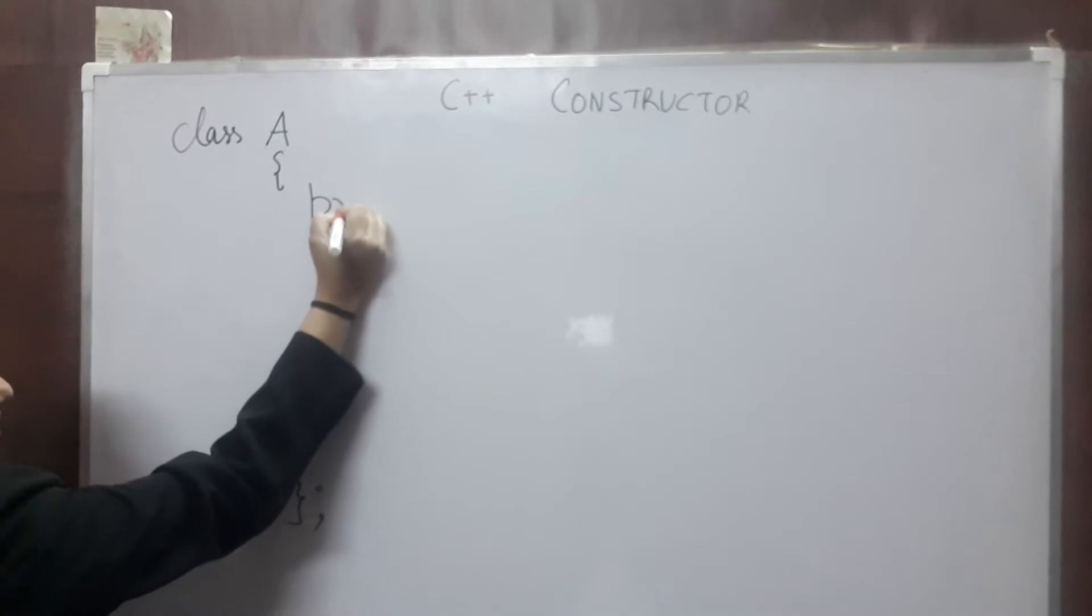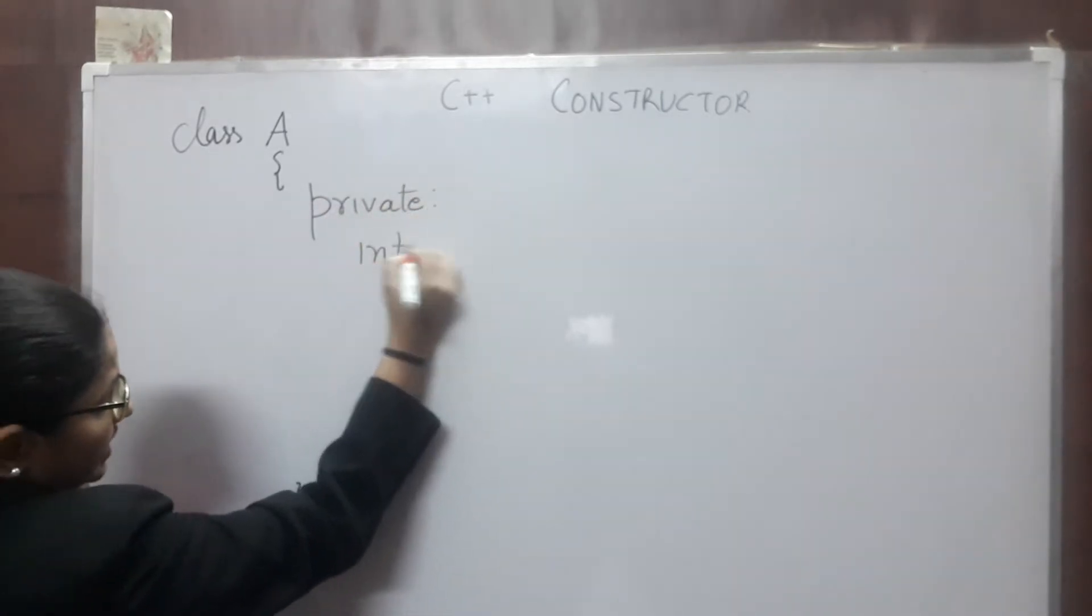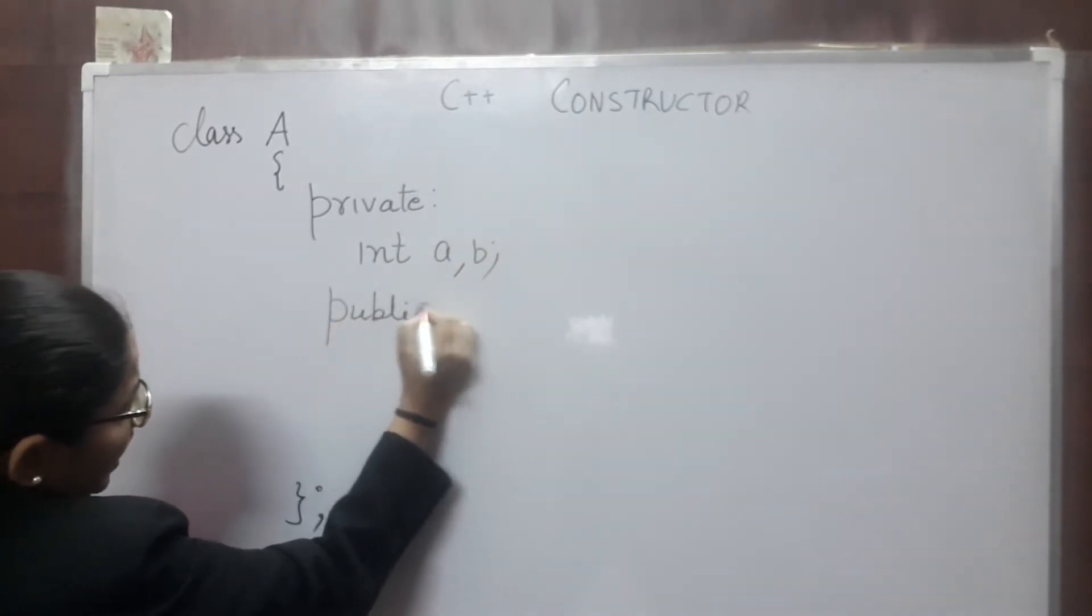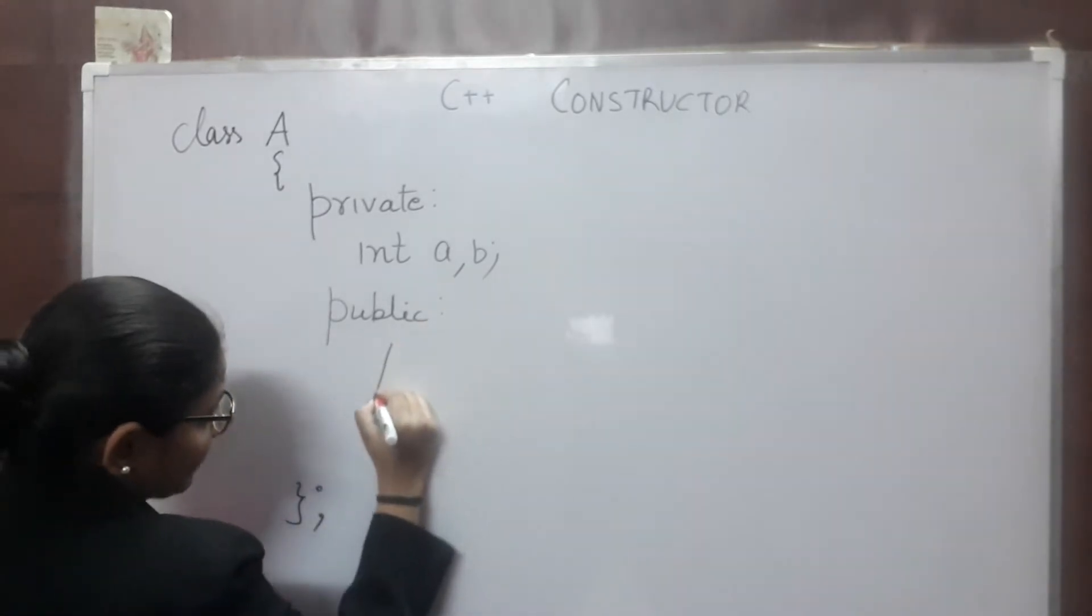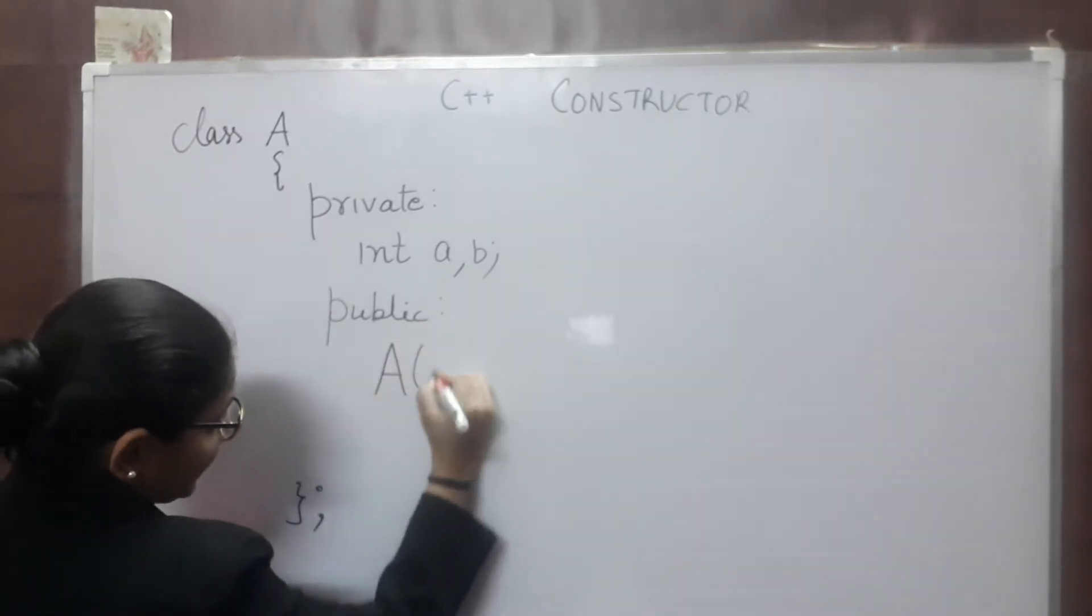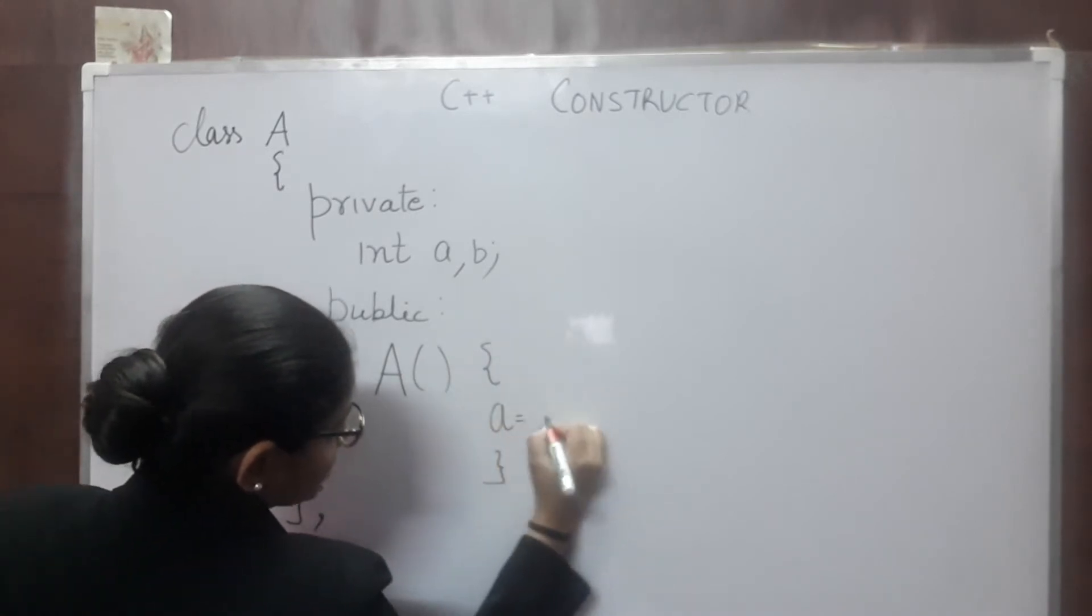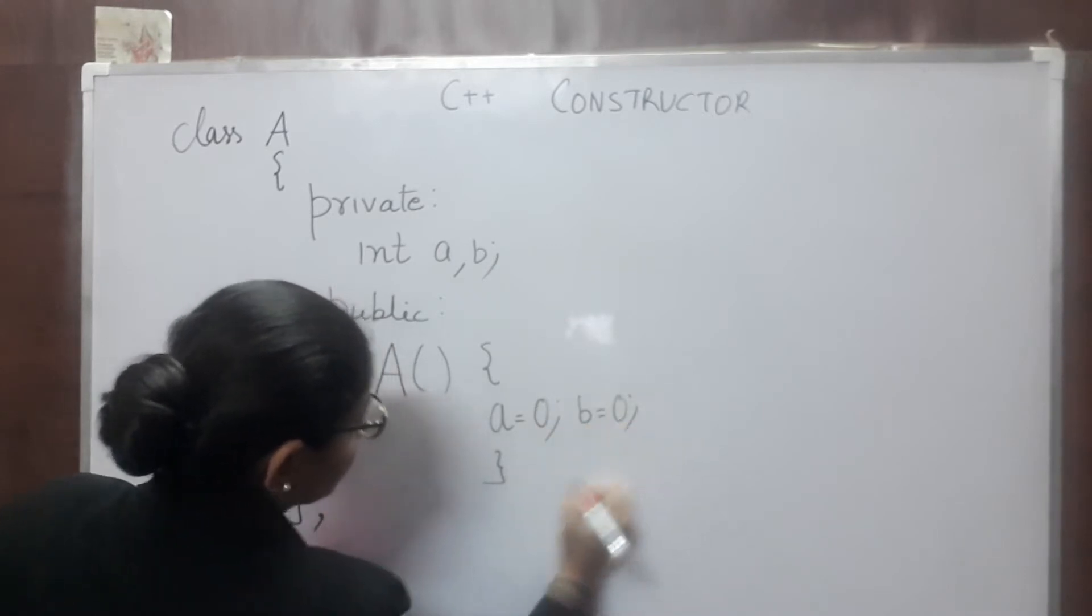In the private section, I have two variables int a, b. In public section, I am having one member function and its name is caps A, curly bracket opening, closing and in between A equals to 0, B equals to 0.